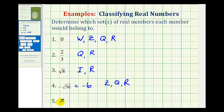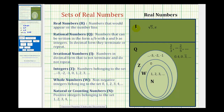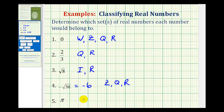In the last example, we have pi. Let's type pi into the calculator. We often use 3.14 as an approximation, but pi is actually a non-terminating decimal, and it's also non-repeating because there's no pattern. So pi is irrational and also real.